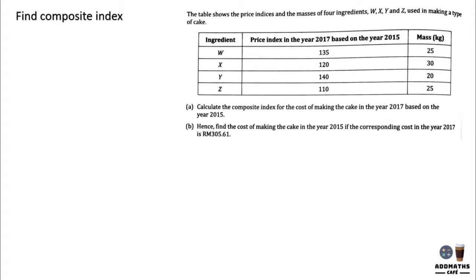Find composite index. To find composite index, first you need to know the formula. The composite index formula is in this way: you have a summation of all the price index times the weightage, divided by the summation of all the weightage, and you will get a composite index. So this is the symbol.